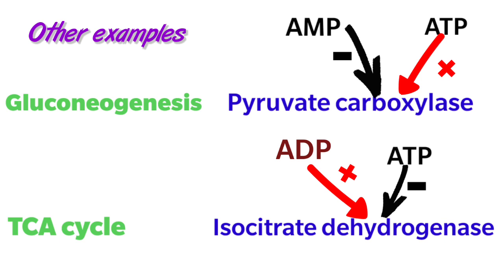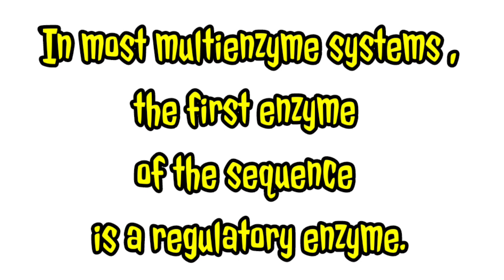ADP increases the activity of isocitrate dehydrogenase because it indicates a low energy state, whereas ATP decreases the activity because it indicates a high energy state of the cell. In most multi-enzyme systems, the first enzyme of the sequence is a regulatory enzyme. This is an excellent place to regulate a pathway because catalysis of even the first few reactions leads to an unneeded product, which diverts energy and metabolites from more important processes.